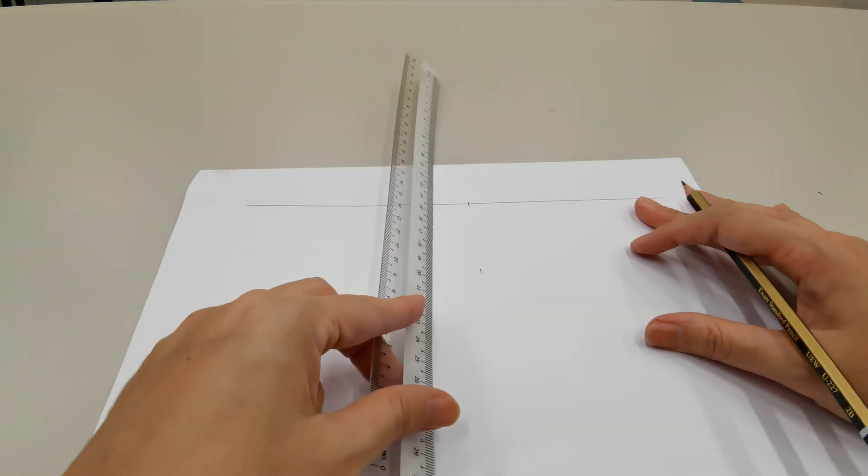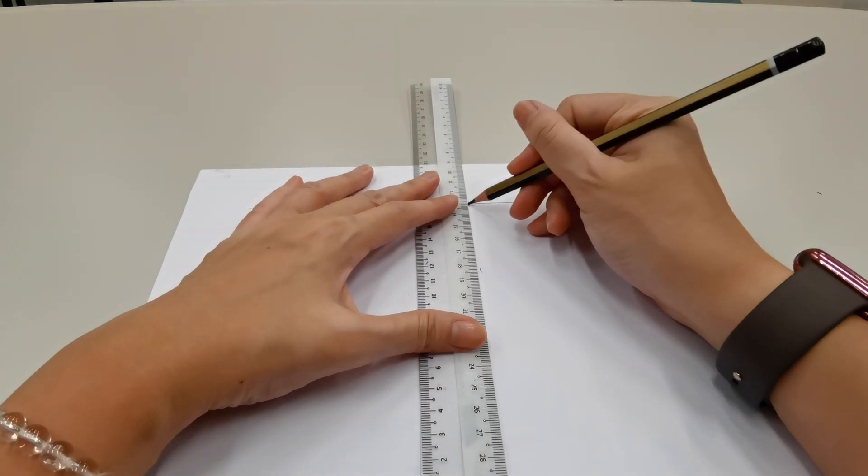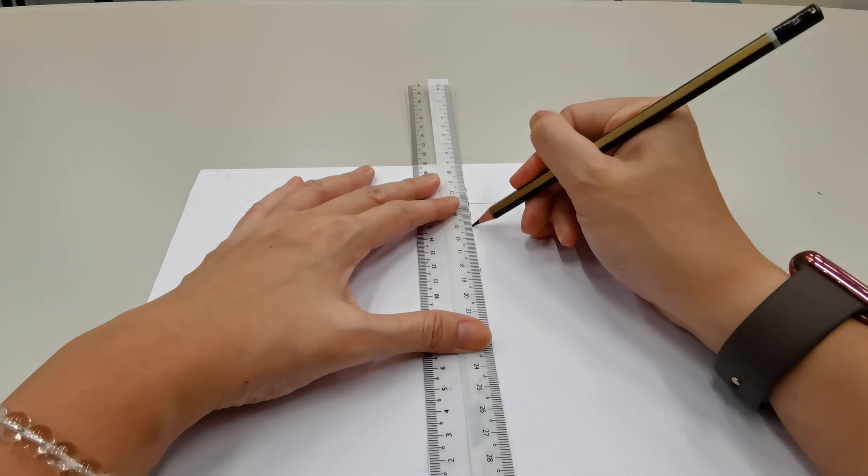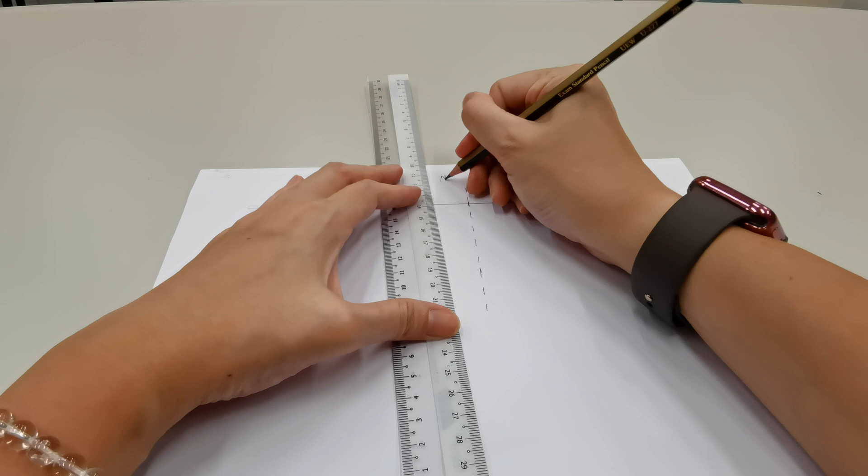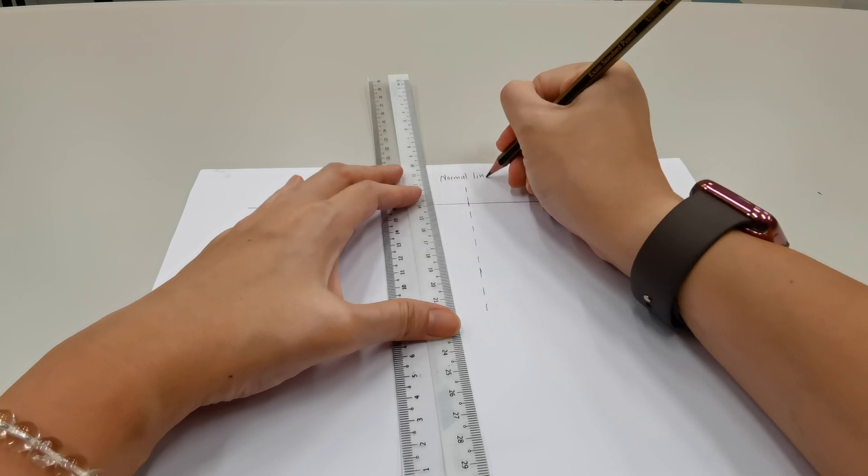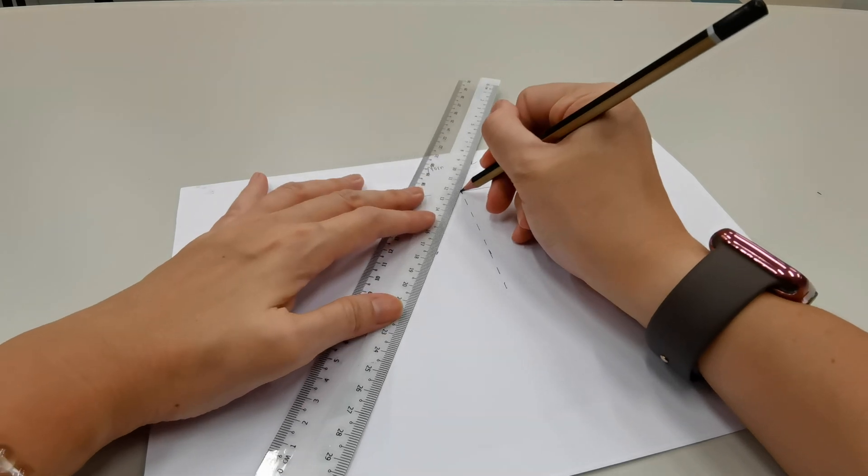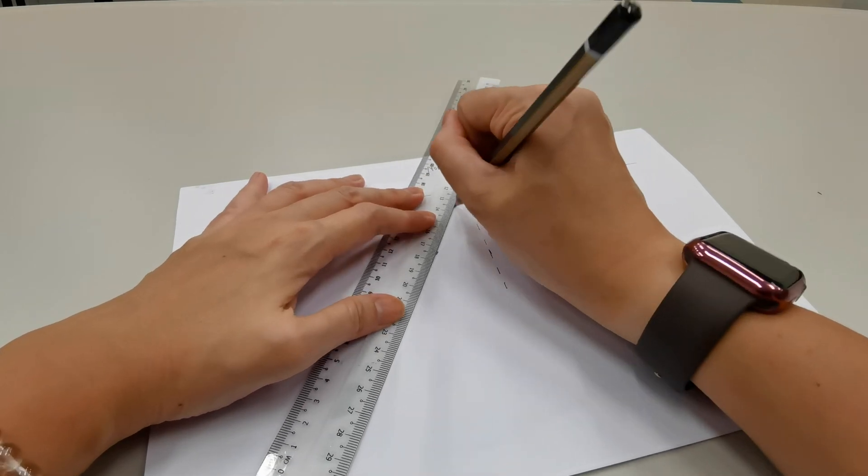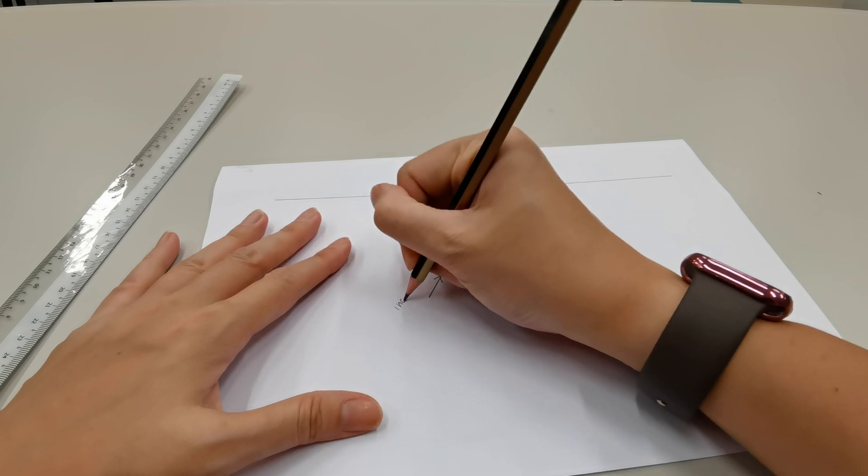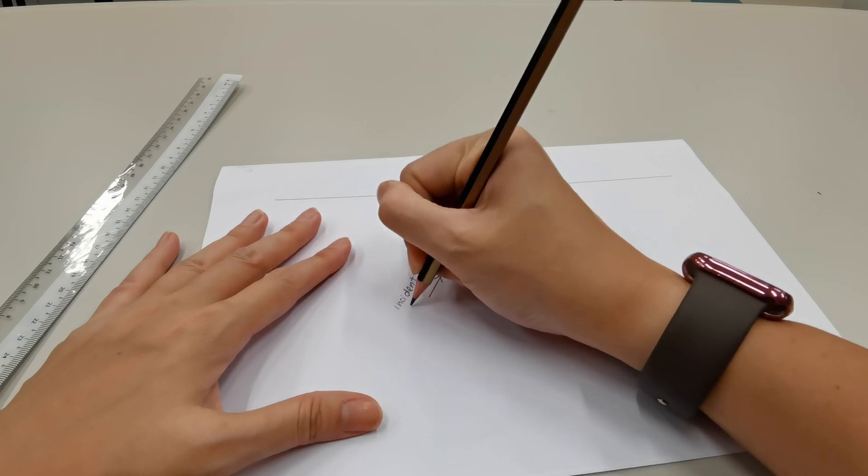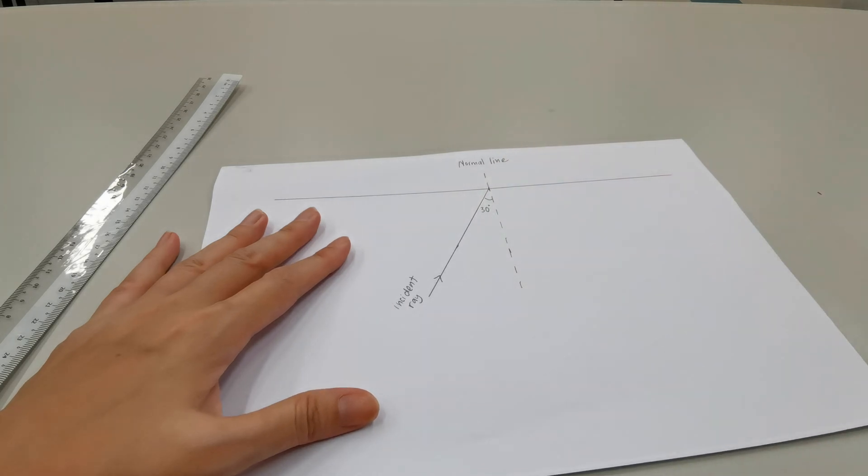And we will use the ruler now to draw the normal line. So the normal line will connect these two points. Label here, normal. And we will connect these two points, which will be the incident ray. So little arrow here to indicate this is the incident ray. This angle here is our incident angle, which is 30 degrees.